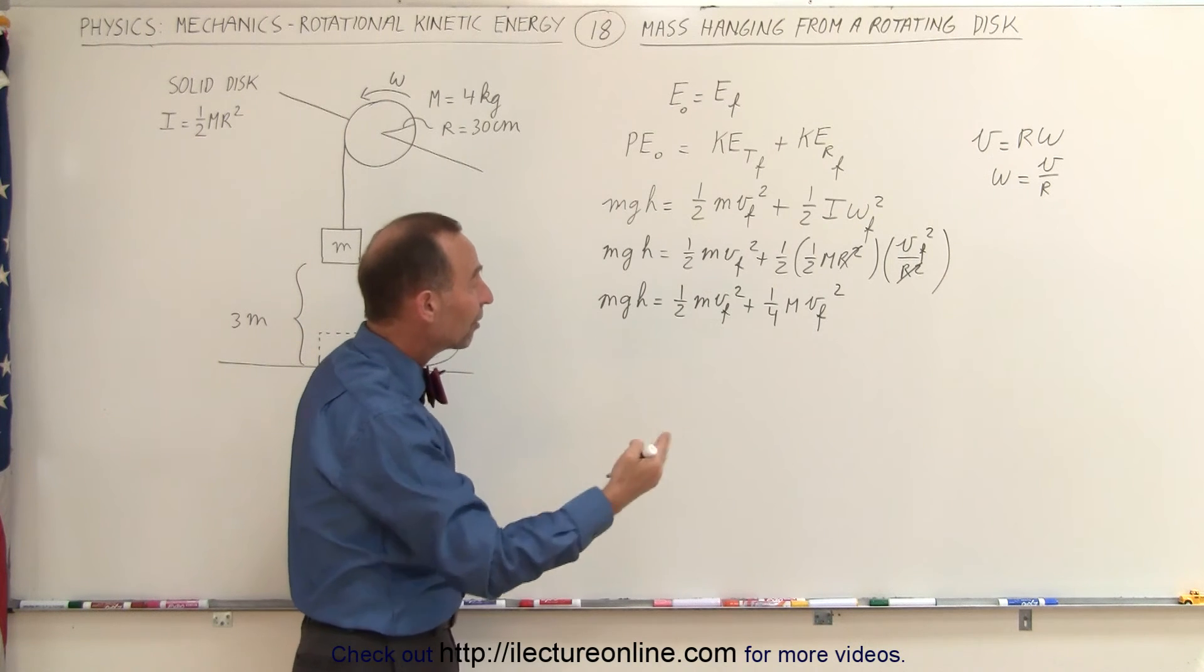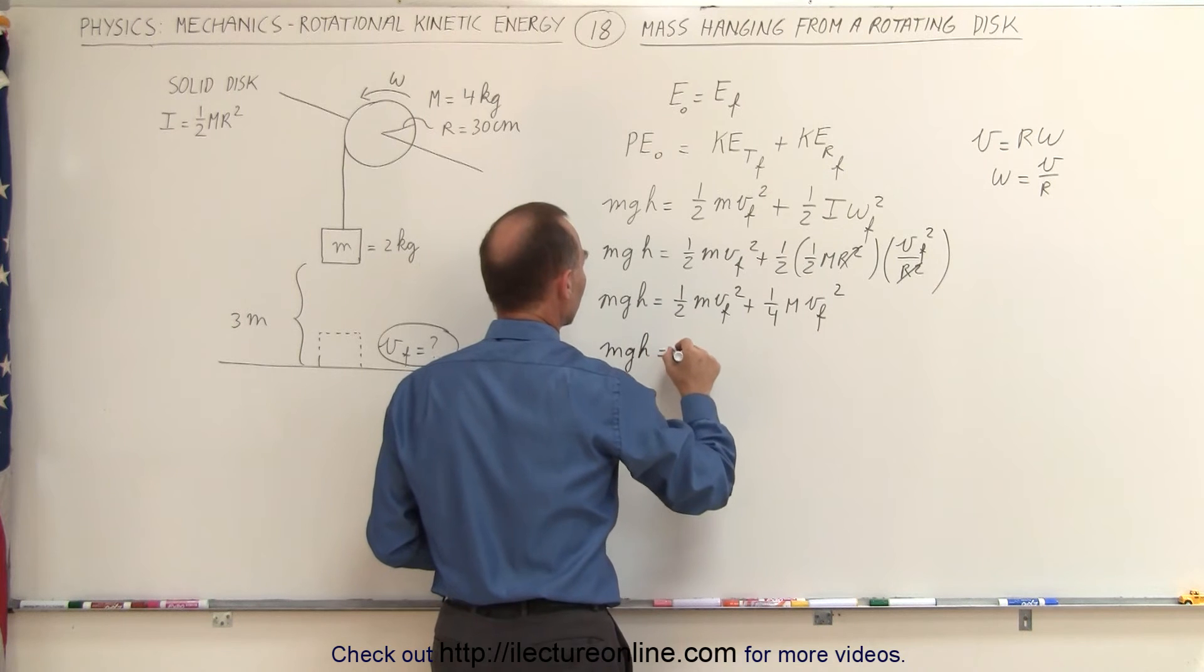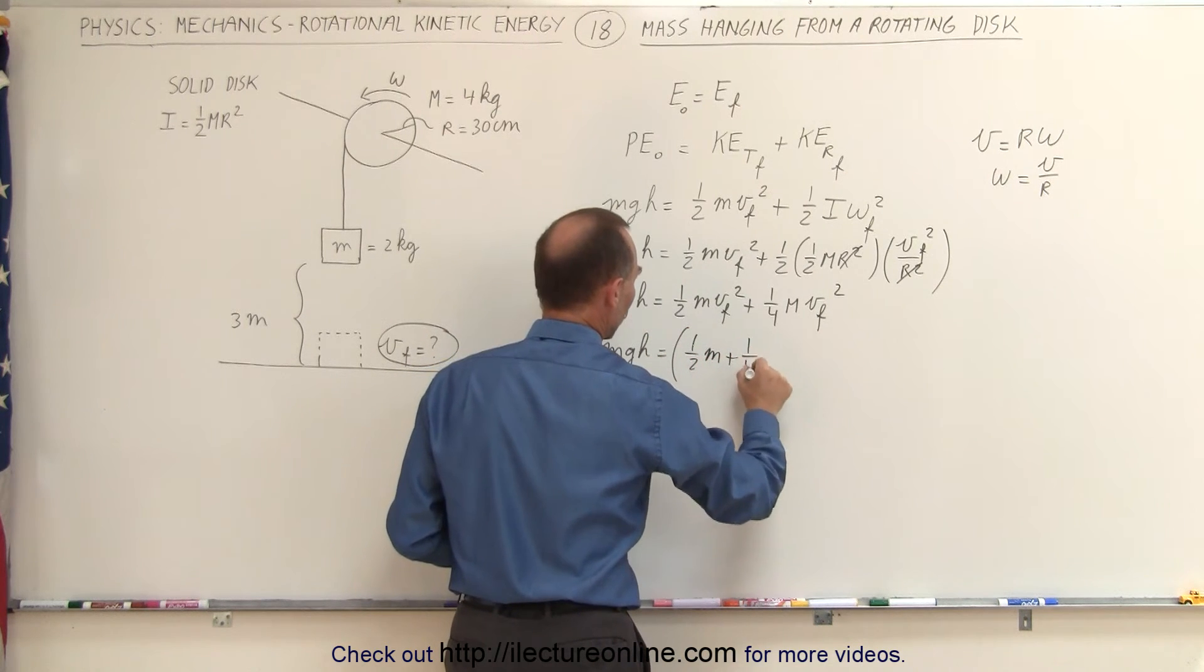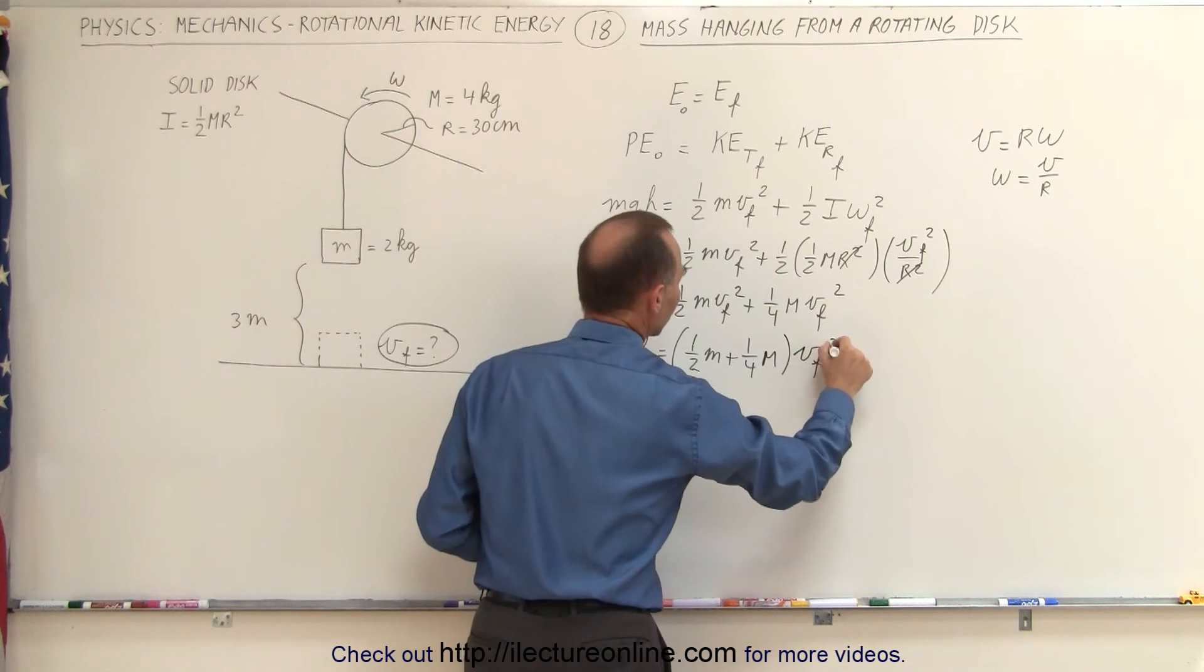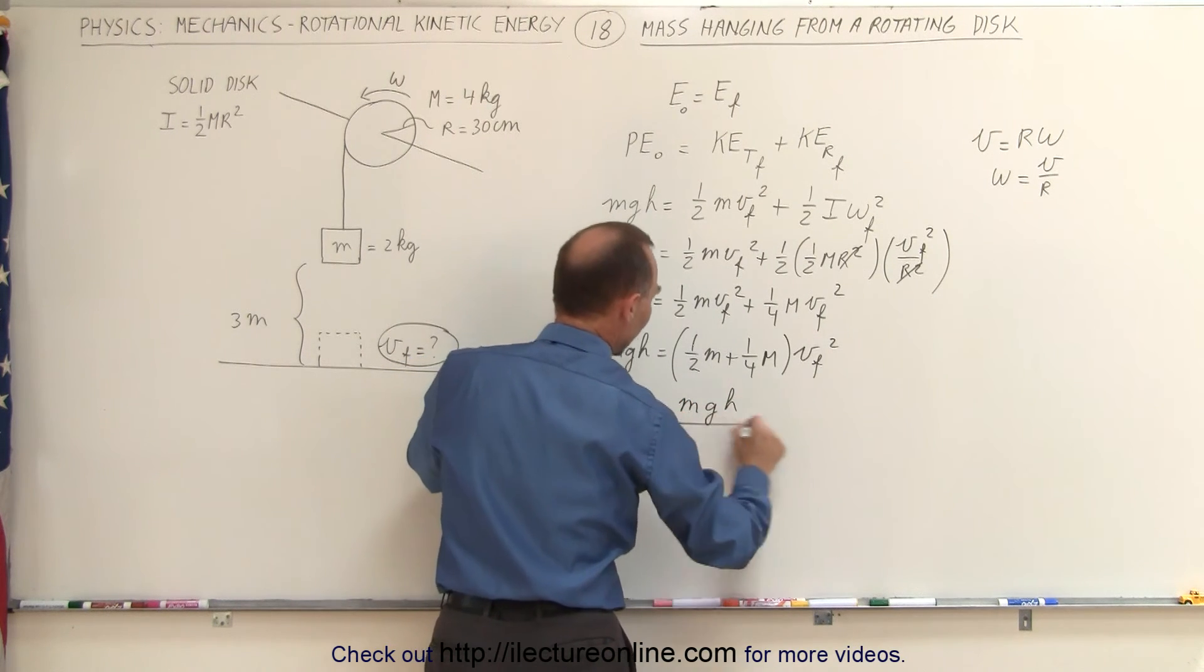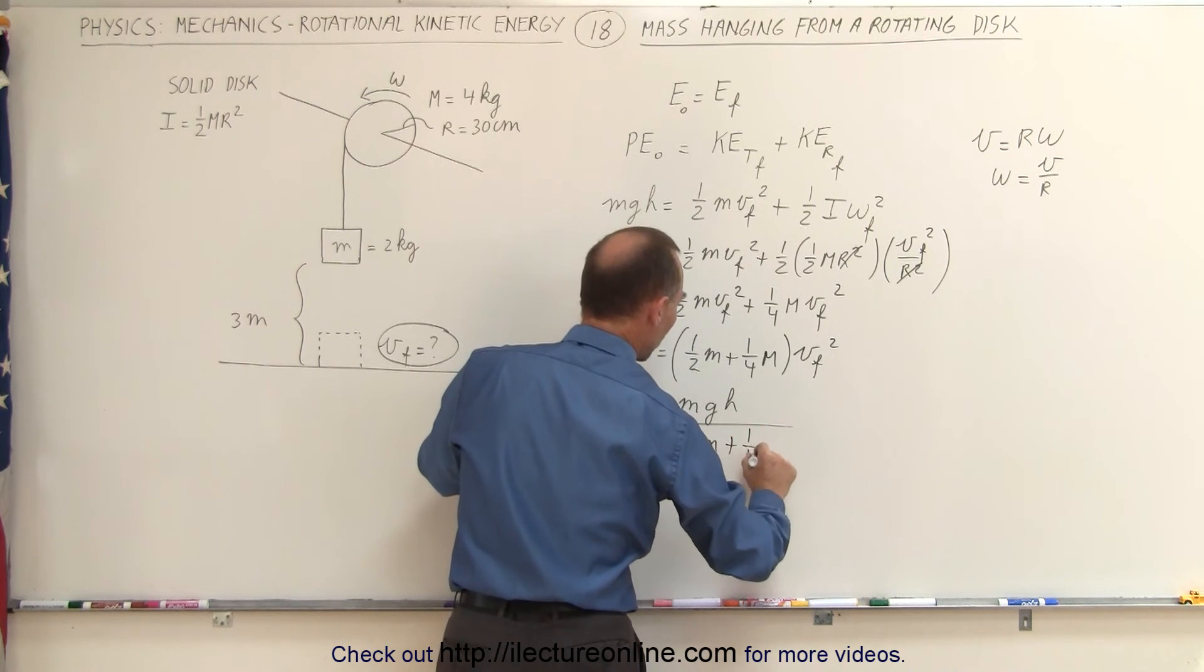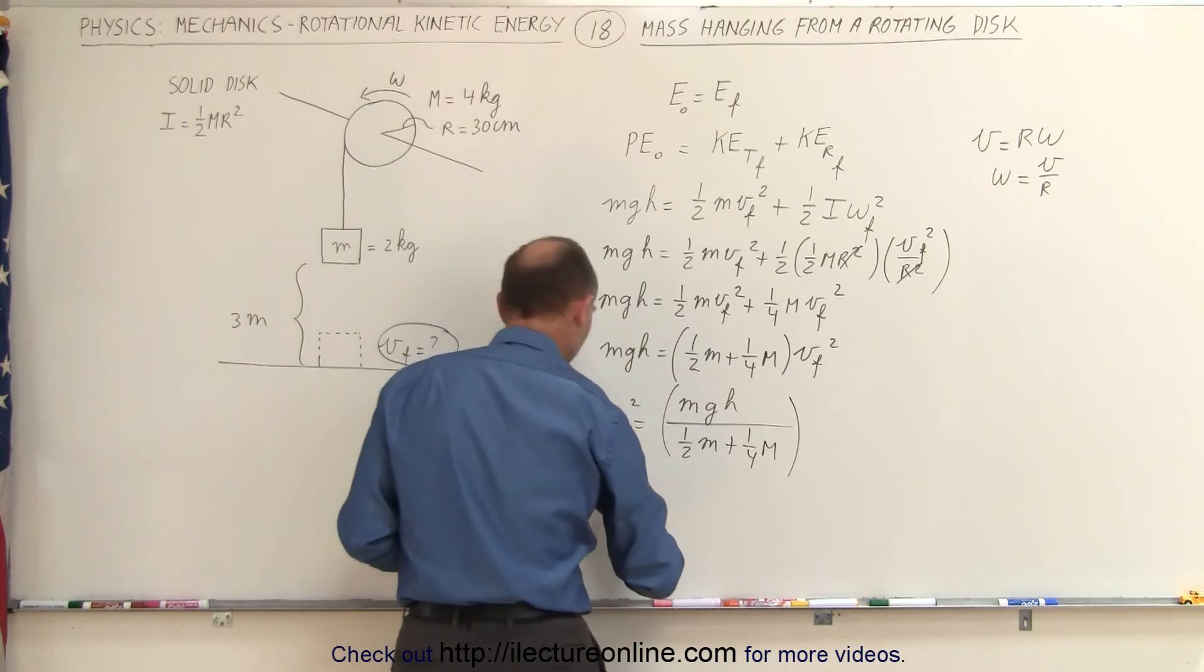Because of that, we have to factor out v final squared. We get mgh is equal to the quantity one-half m plus one-quarter capital M times v final squared. Solving that for v final squared, we get v final squared is equal to mgh divided by one-half times the mass of the object plus one-quarter times the mass of the disk. Now we take the square root of both sides.